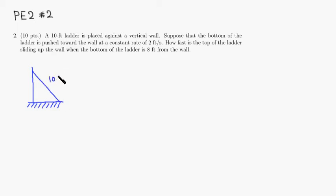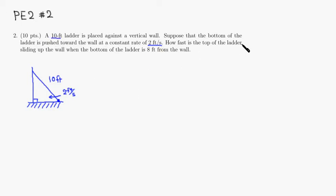The ladder is 10 feet, placed against the vertical wall so it's a right angle there. The bottom of the ladder is pushed toward the wall — it's actually moving. So the bottom of the ladder is moving toward the wall at the rate of 2 feet per second. The length of the ladder is right there, and we need to find how fast the top of the ladder is sliding up the wall.